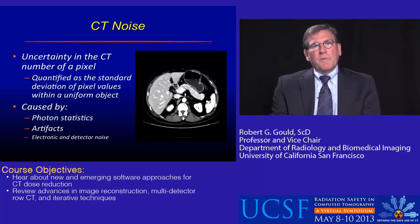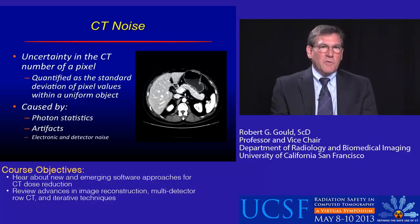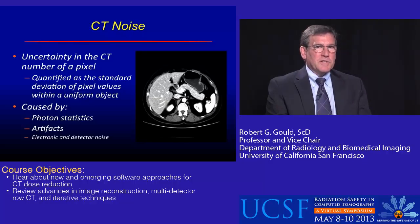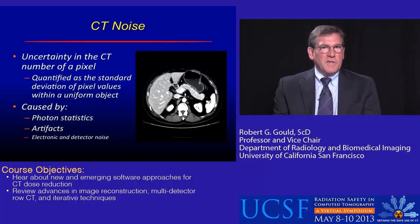The problem is that there is CT noise. There is always a level of uncertainty in the CT number that the reconstruction assigns to a particular pixel. We can quantify that uncertainty as the standard deviation of the pixel values within a uniform object.